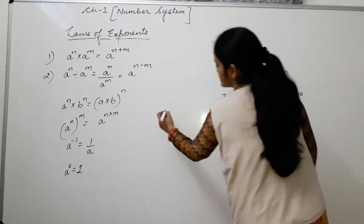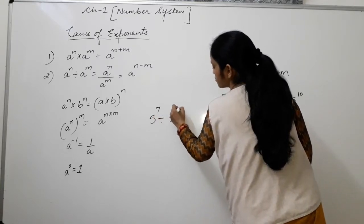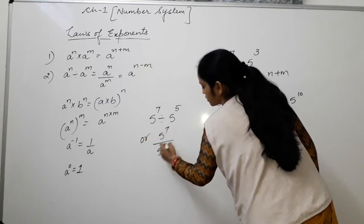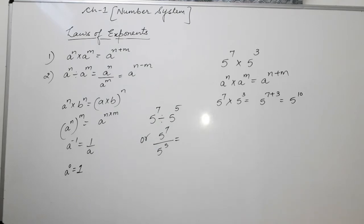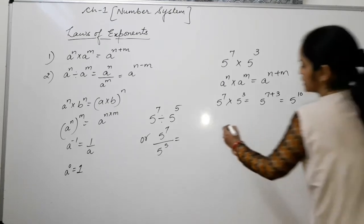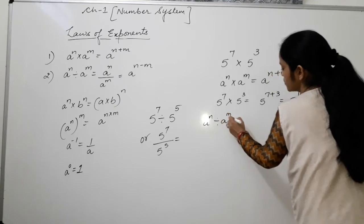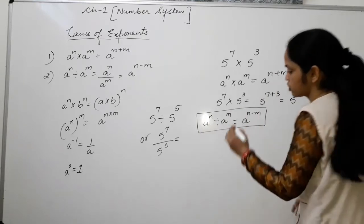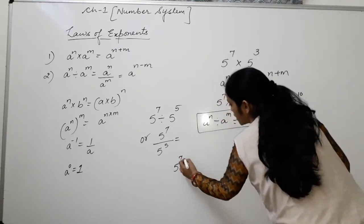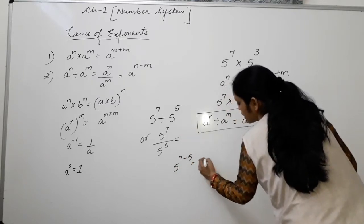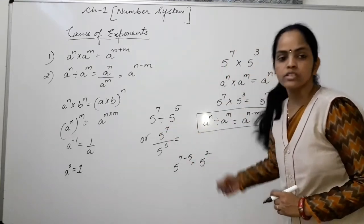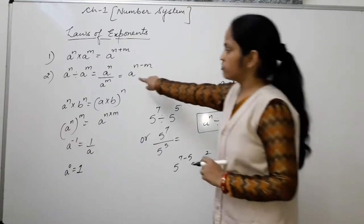For example, 5 to the power 7 divided by 5 to the power 5, which can also be written as 5^7 upon 5^5. We can solve it by applying the second law of exponents: a to the power n divided by a to the power m equals a to the power n minus m. After applying the law, we get 5 to the power 7 minus 5, which is 5 to the power 2. So 5^2 is our answer.